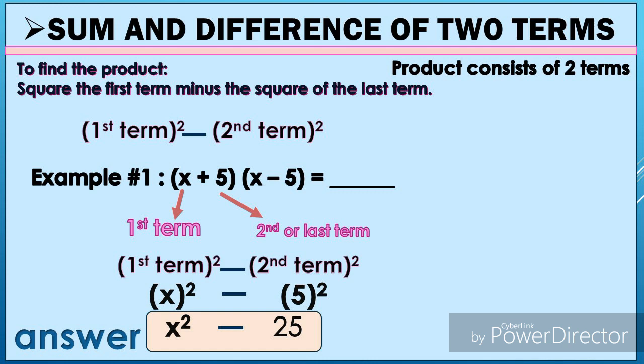Example: the quantity of (x + 5) times the quantity of (x − 5). The first term here is x and the second term is five. Based on the pattern, we square the first term and square the second term. Our first term is x, so we have x², and the last term is five, so that is 5² = 25. Therefore, the answer is x² − 25.